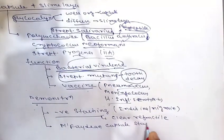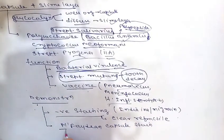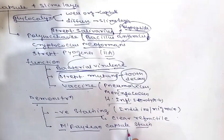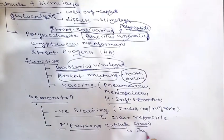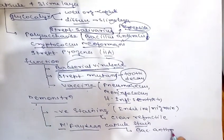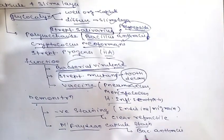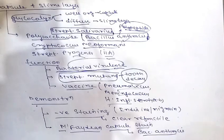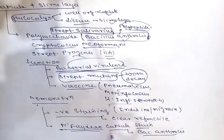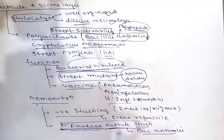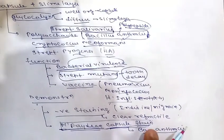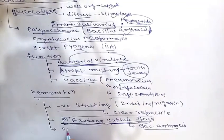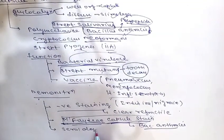The next method is M'Fadyean capsule stain, which is used mainly for demonstration of the capsule of Bacillus anthracis. M'Fadyean capsule stain is the specific method for Bacillus anthracis capsule demonstration.